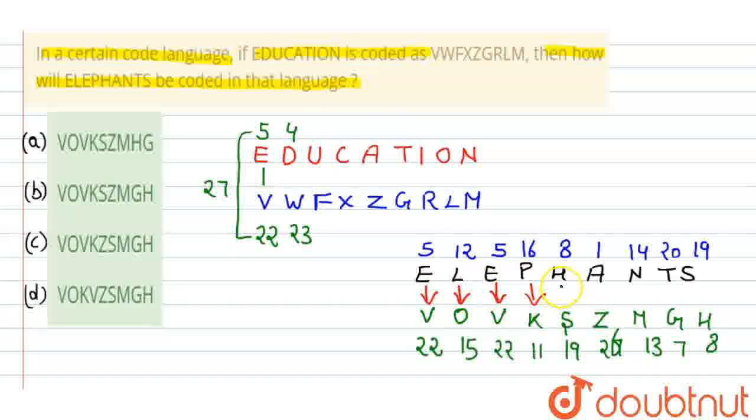So what code do we get for ELEPHANTS? E is coded as V, L as O, E again V, P as K, H as S, A as Z, N as M, T as G, and S as H. Your code came here: V O V K S Z M G H. This is our code.